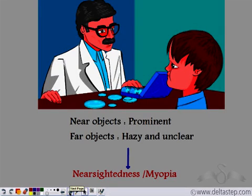So he went to the doctor. He told the doctor that near objects seem prominent, but far objects seem hazy and unclear. The doctor told him that he was suffering from a condition known as nearsightedness or myopia.